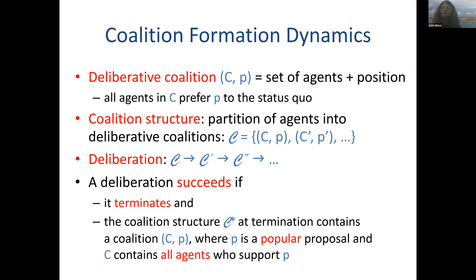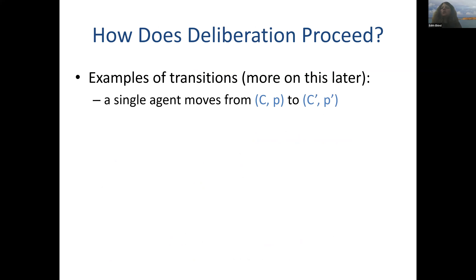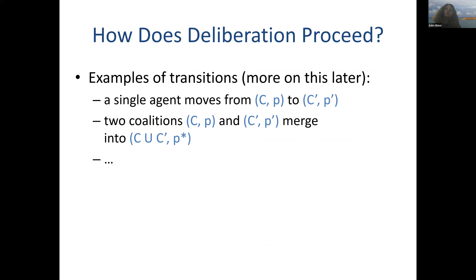We capture evolution by a notion of deliberation: a sequence of deliberative coalition structures. We want deliberation to converge to a good outcome. Specifically, we say deliberation succeeds if first it terminates — doesn't cycle indefinitely — and second, the coalition structure at termination discovers a popular proposal. More specifically, it contains a coalition together with a proposal such that the proposal is popular, having at least as much support as any other proposal, and it contains all agents who support it. Possible transitions include a single agent moving from one coalition to another, or two coalitions merging and adopting a new proposal.